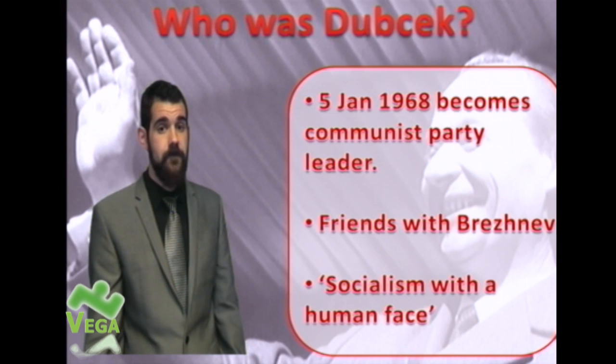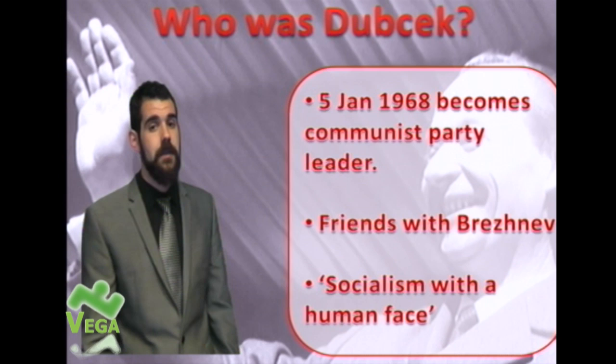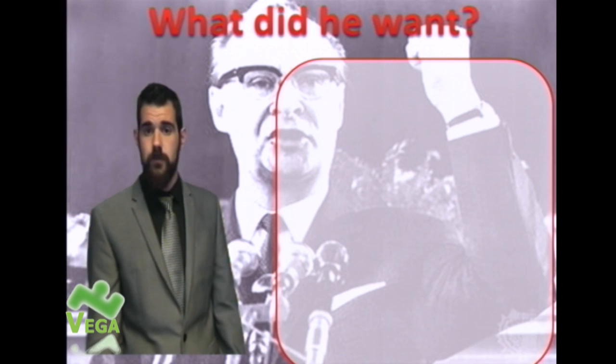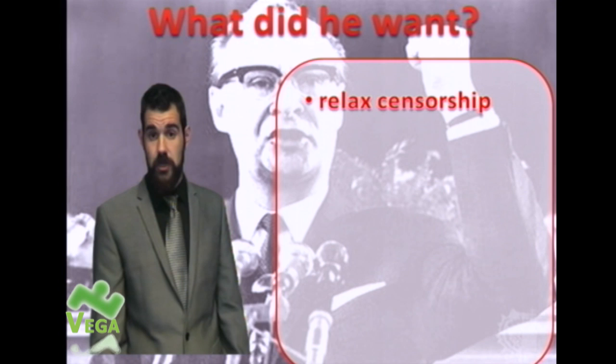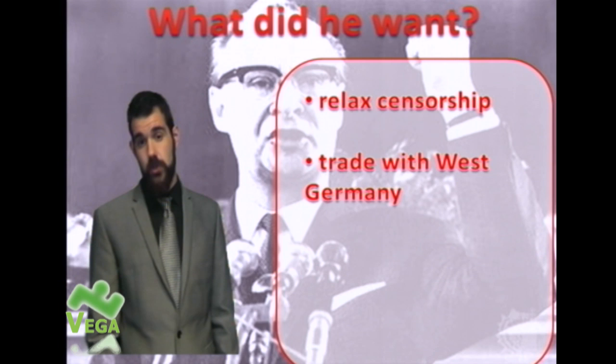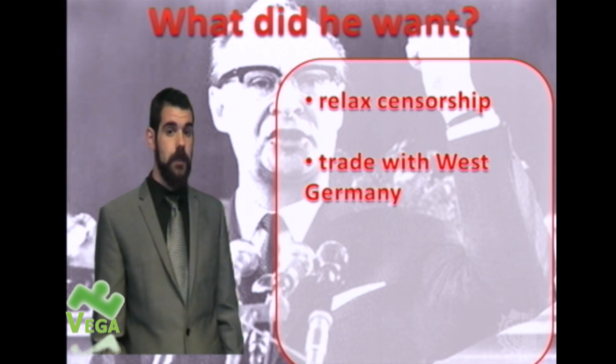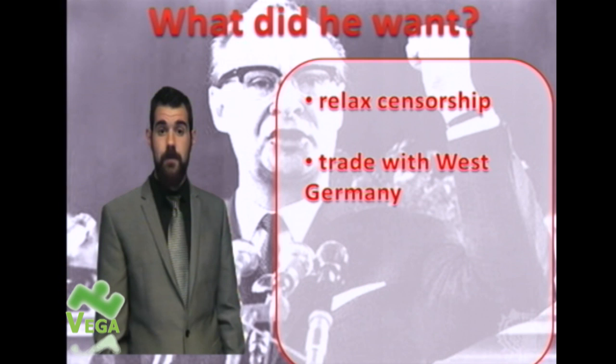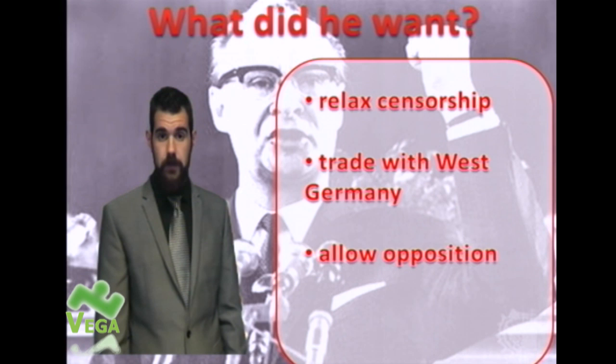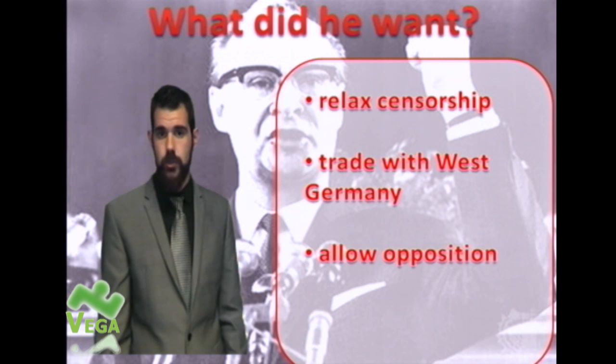His idea is 'socialism with a human face.' He doesn't want to get rid of communism — far from it — he wants to make it more popular with the Czech people again. He wants to relax censorship, giving journalists and artists more freedom of speech. He wants to trade with West Germany, as the economy isn't working and he sees a little more market capitalism as helping. He also wants to allow opposition parties — not just the Communist Party — for at least an illusion of democracy.